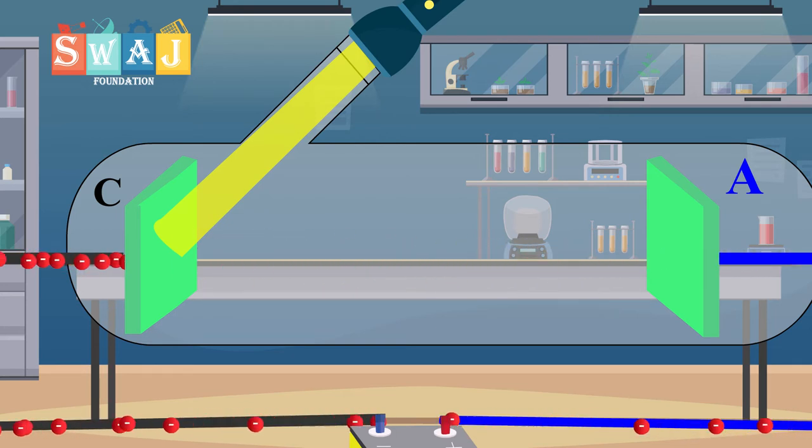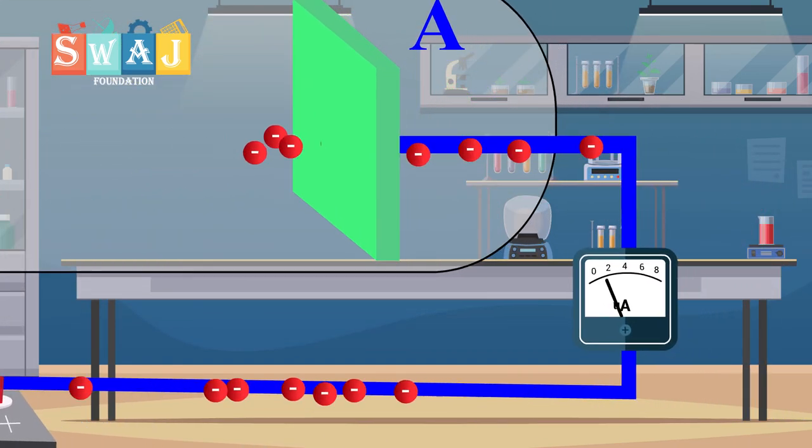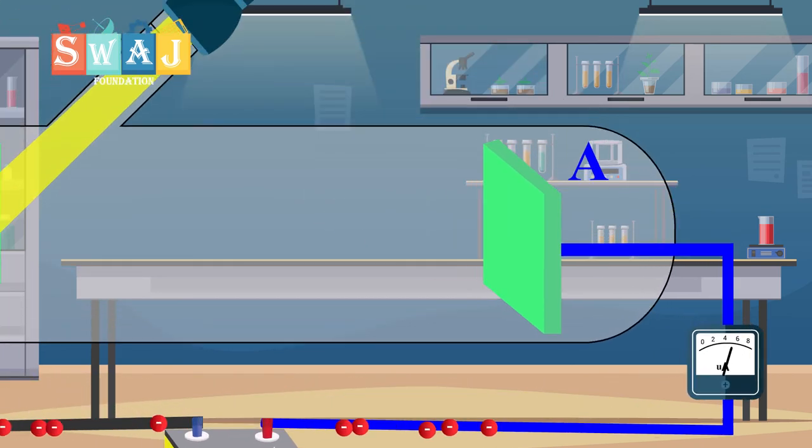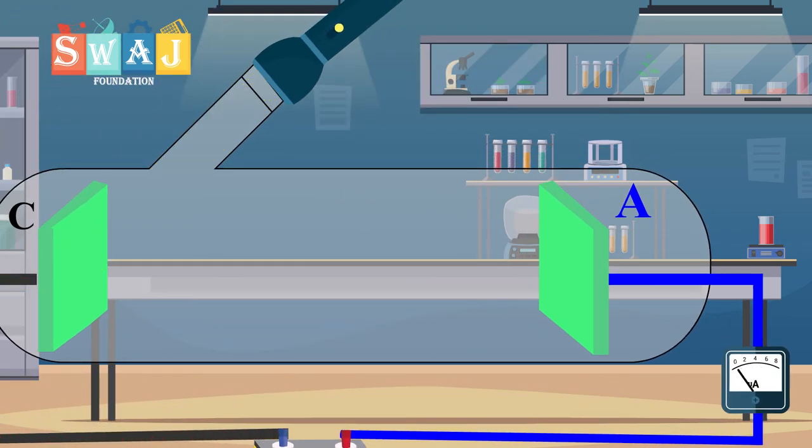These photoelectrons are attracted by the positive anode and the resulting current is measured by an ammeter. The current stops when light is cut off, which proves that the current flows because of incident light. This current is hence called photoelectric current.